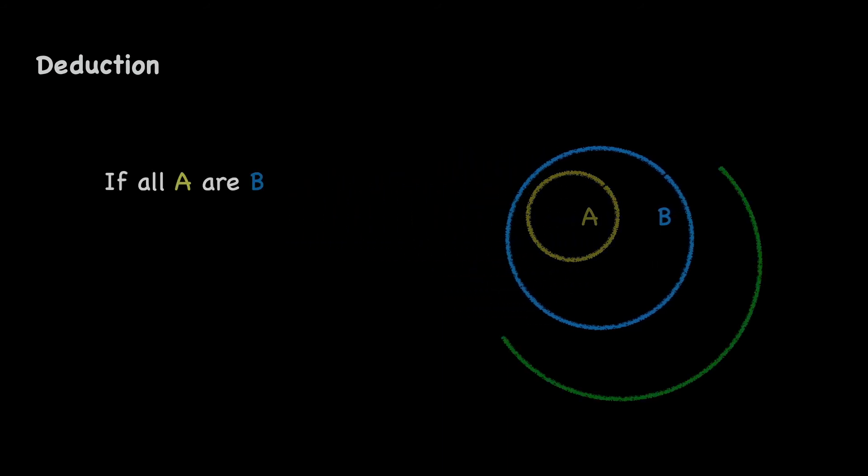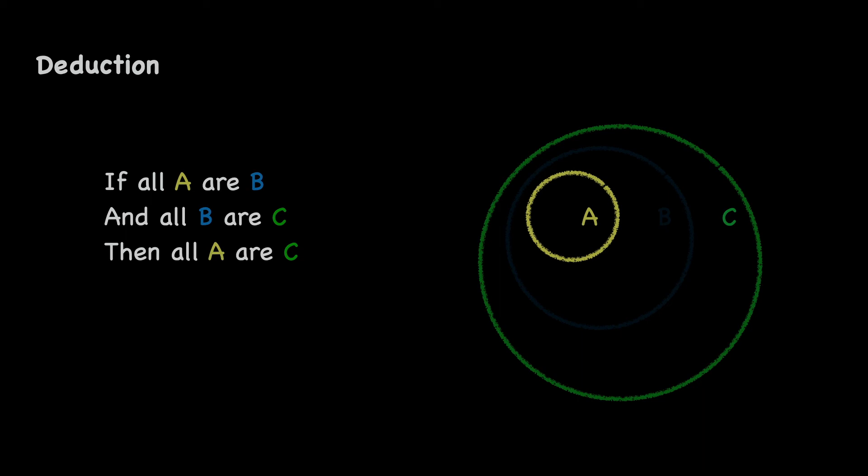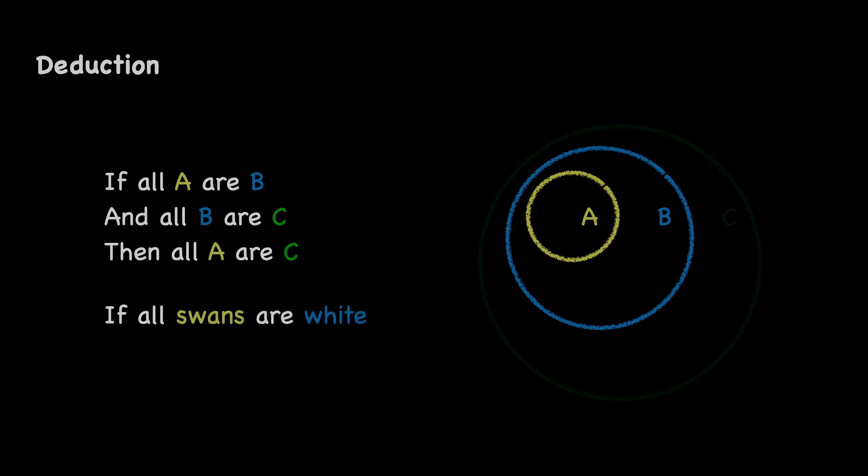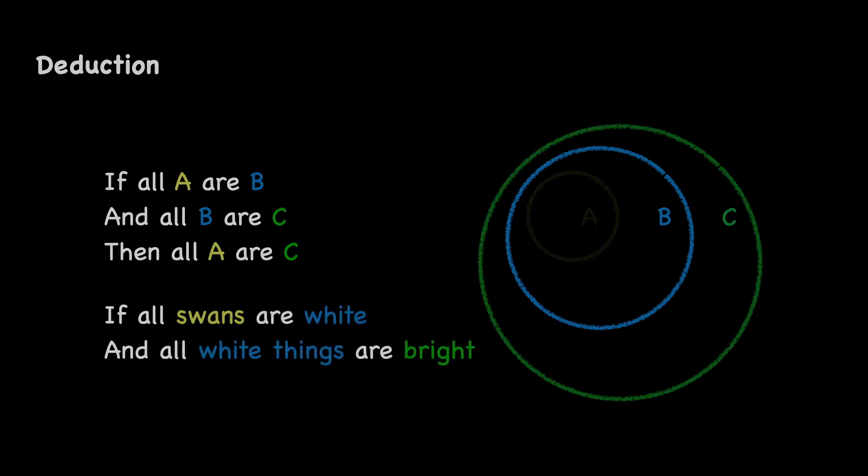Deduction is also commonly used for simple propositions, as represented as Venn diagrams, like so: all A's are B's, some A's are B's, no A's are B's. So if all A's are B's, and all B's are C's, then all A's are C's. We cannot imagine it any other way. For example, if all swans are white, and all white things are bright, then all swans are bright.